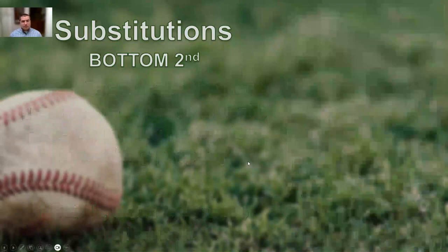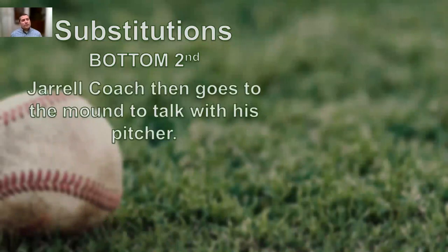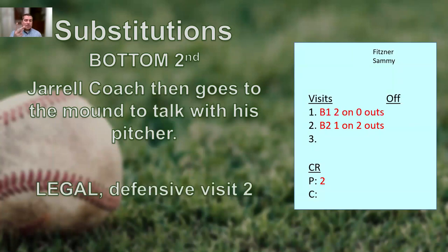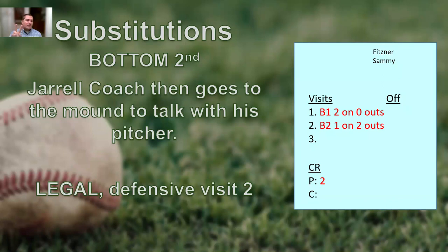Taking it one step further — still bottom of the second — after finishing with the catcher, coach goes up to the mound to talk to the pitcher. Is this legal? Yes, absolutely. This is their defensive visit. Mark it on the lineup card: bottom of the second, one on, two outs, batter number six at the plate. As the coach leaves the mound, be helpful and say, 'Coach Fitzner, that's your second visit — you have one more left.' He's used one in the first, one in the second, and has one eligible visit remaining.